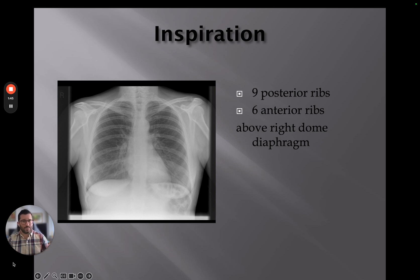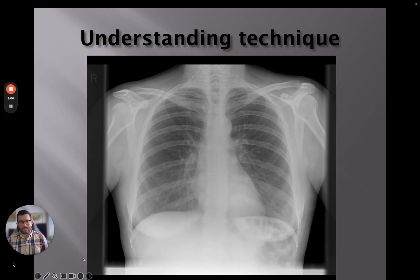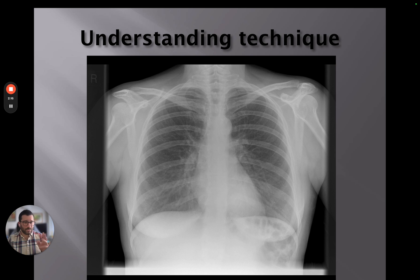We're going to go through a number of slides covering different topics and what those factors mean for the image in front of you. Starting with inspiration — here we can see a very good inspiration. We should be seeing nine posterior ribs and six anterior ribs above the dome of the diaphragm. We count the anterior ribs, and it's the same ribs — we're just seeing them either anteriorly or posteriorly. We're looking at a three-dimensional structure on a two-dimensional image.